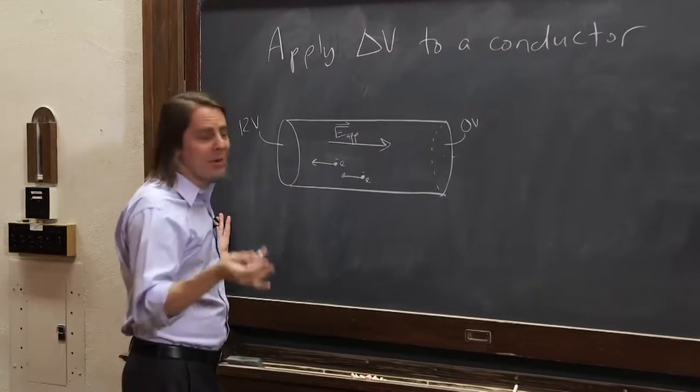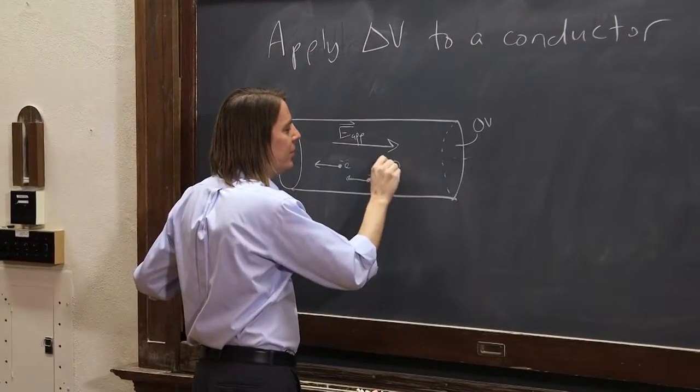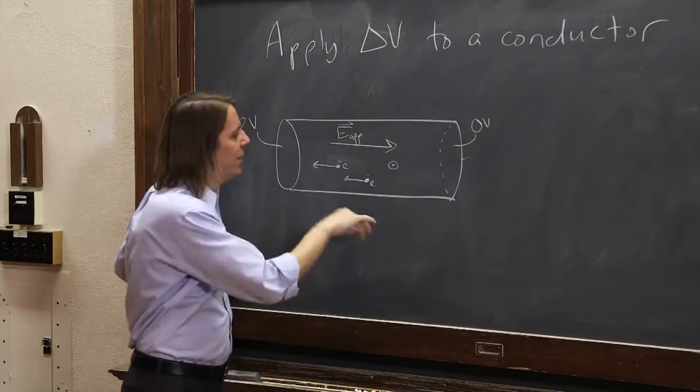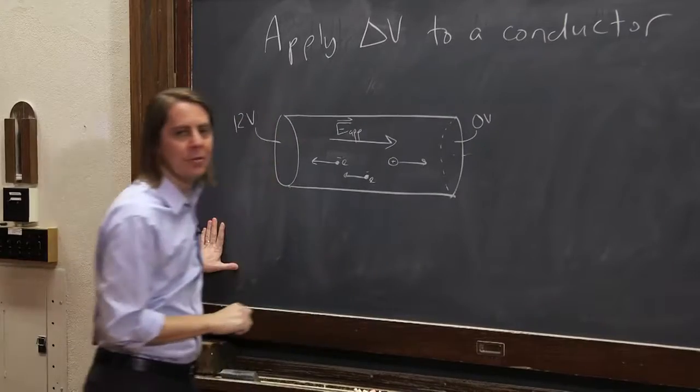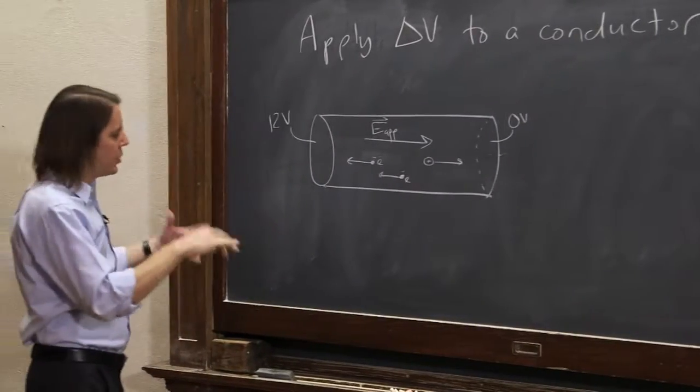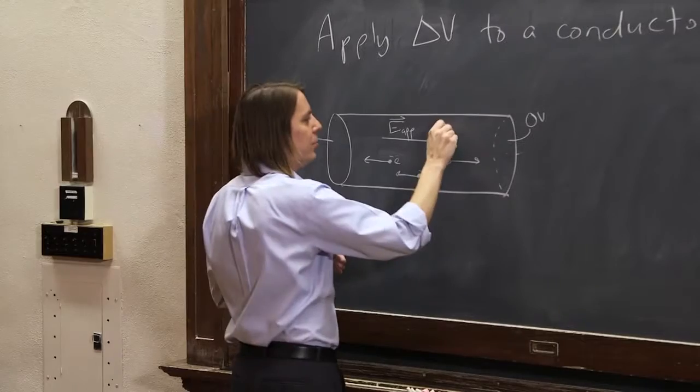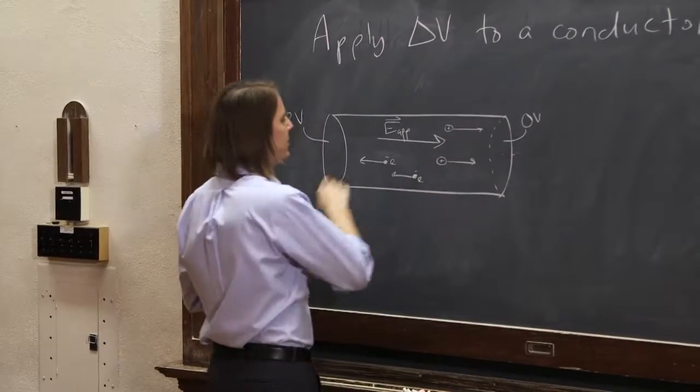And if you want to think about it this way, there's also little missing electrons. Sometimes we call them holes, although in a metal they aren't as important. But since they're positively charged, they feel a force that way. So the charges start to drift: positive to the right, negative to the left.